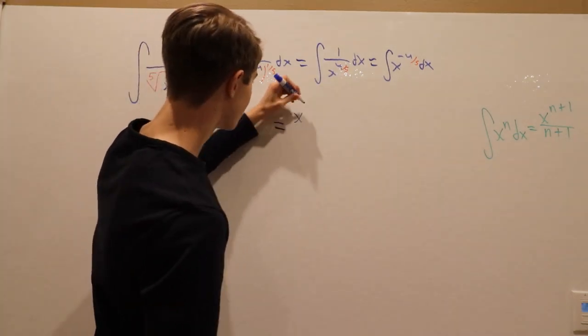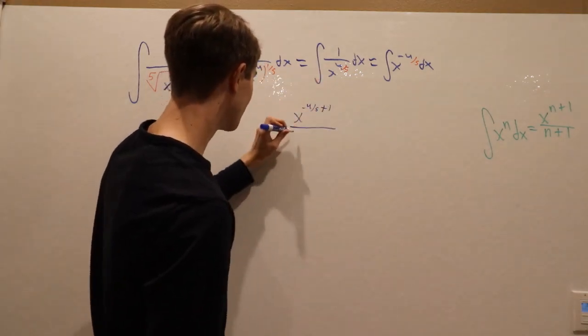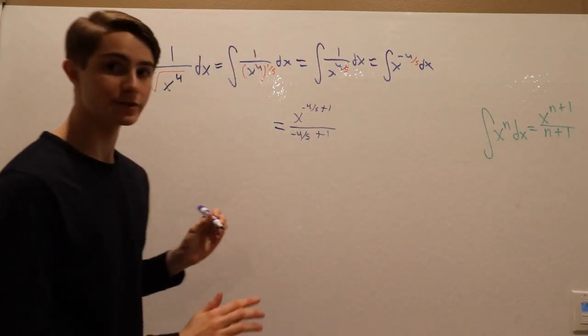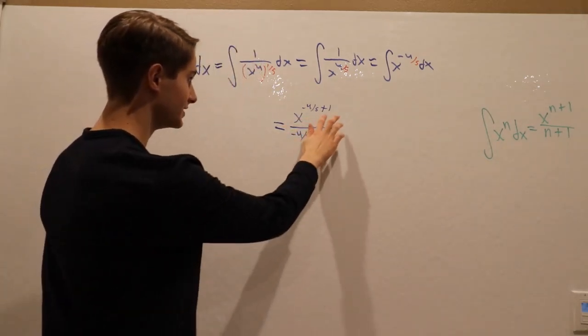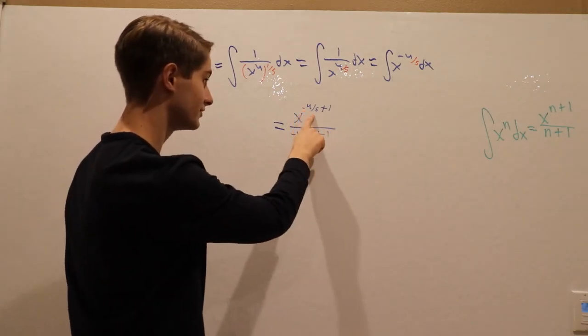x to the negative four-fifths plus one, divided by negative four-fifths plus one. From here to simplify, we can use the fact that one is equal to five-fifths, so negative four-fifths plus five-fifths just gives us one-fifth.